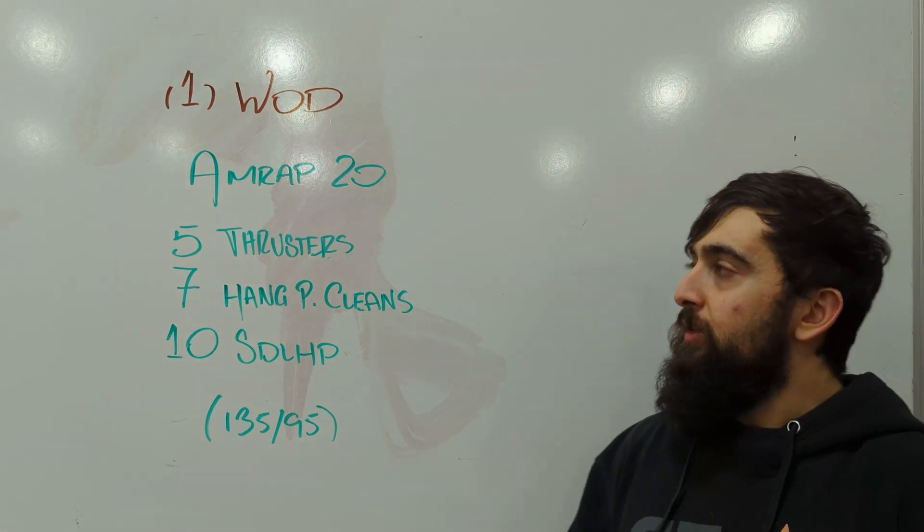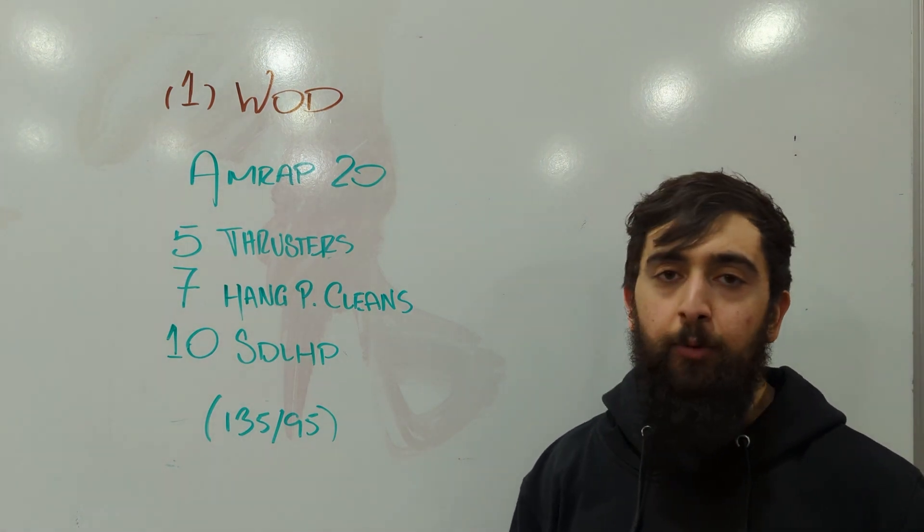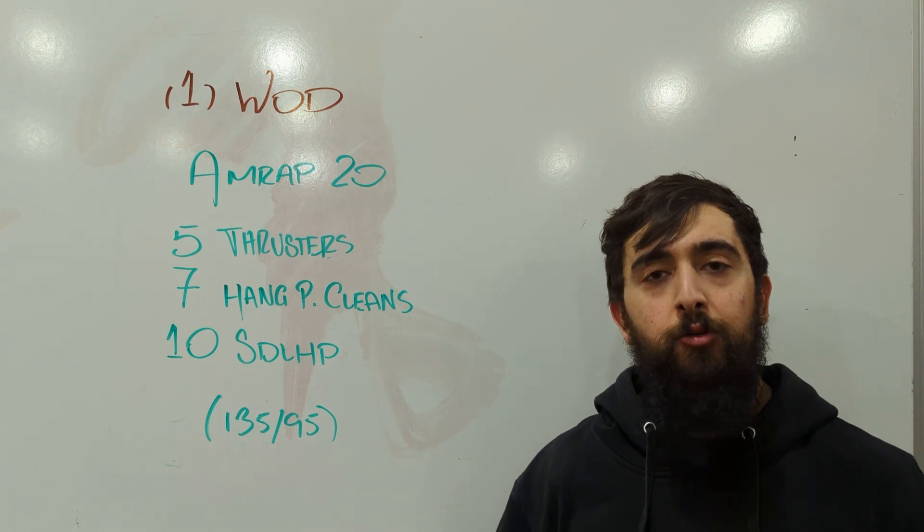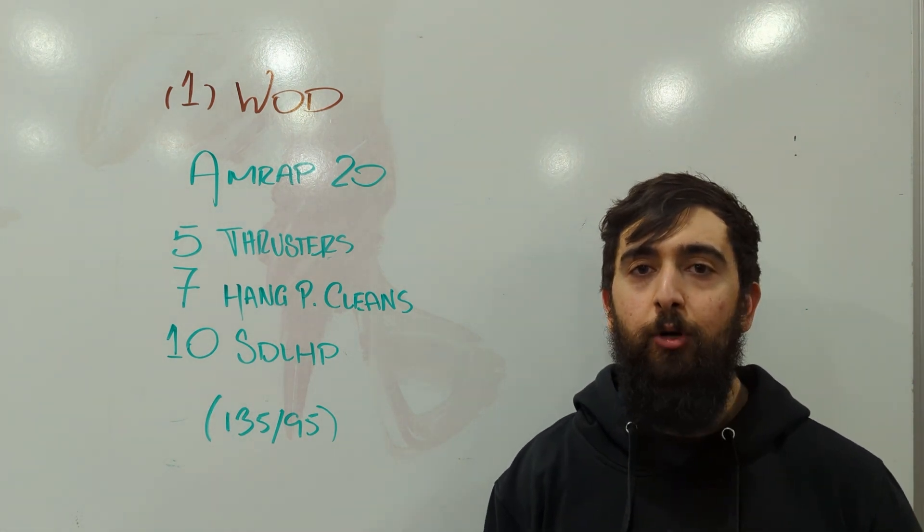So today's workout, it's an AMRAP 20. We have five thrusters, seven hang power cleans, ten sumo deadlift high pulls at 135/95. So this is a heavy barbell workout. This whole workout, you're going to be tossing that barbell around.